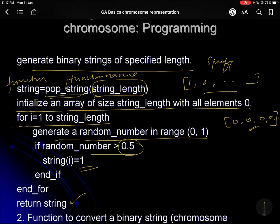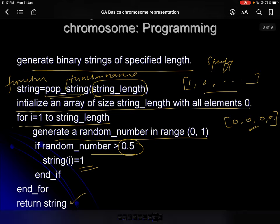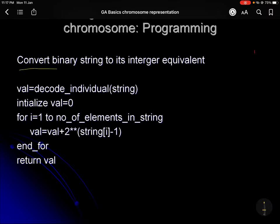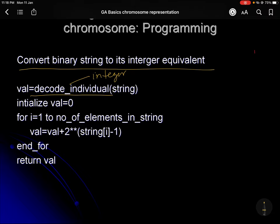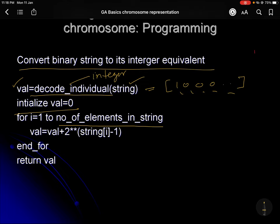Now we'll see how to convert a binary string into an integer equivalent. Another program for this — the function name is code_individual — means from a string you find the value of the individual. Here we are finding the individual value in integer terms only; scaling will be done later. The output is the integer value. The input is a string — basically a chromosome segment of ones and zeros. We initialize the value to zero.